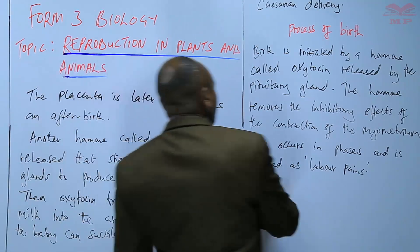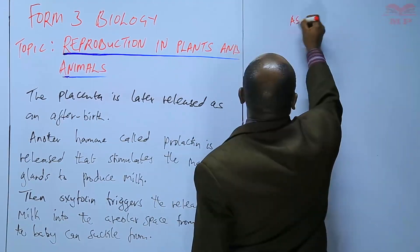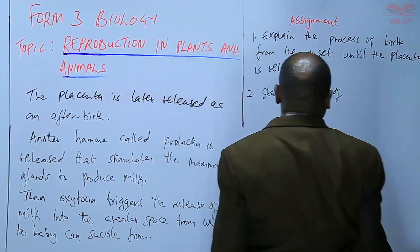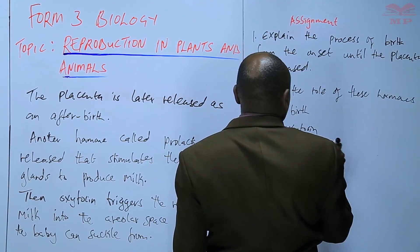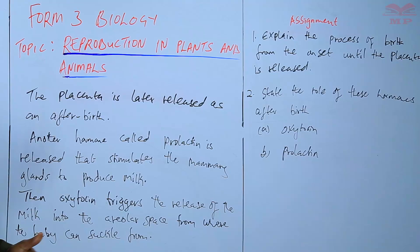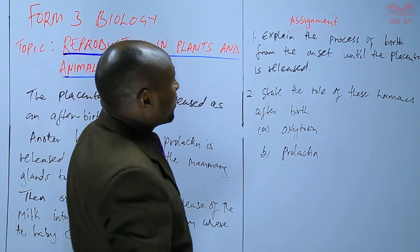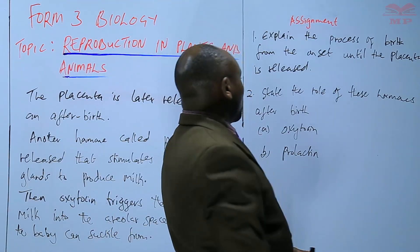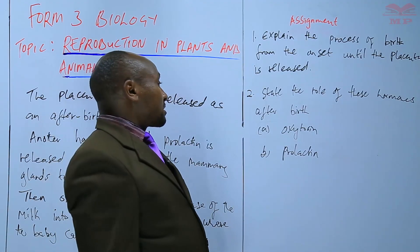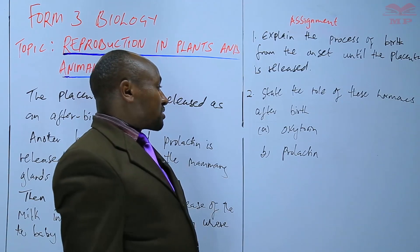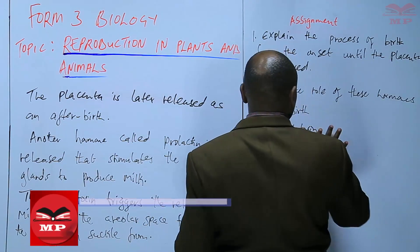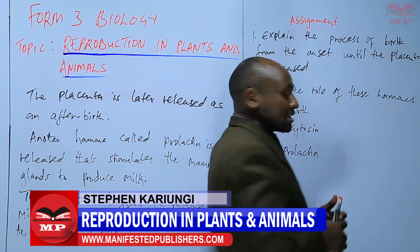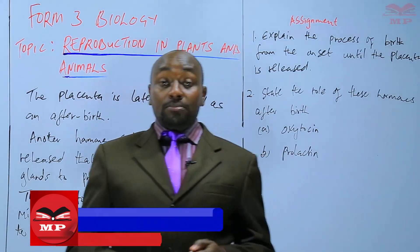So we'll have an assignment. The first question: explain the process of birth from the onset until the placenta is released. And number two: state the role of these hormones after birth — a) oxytocin, and b) prolactin. So we'll stop there until next time, goodbye.